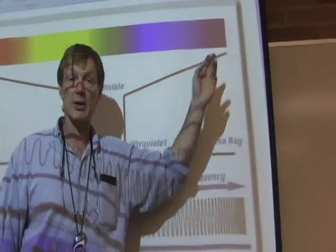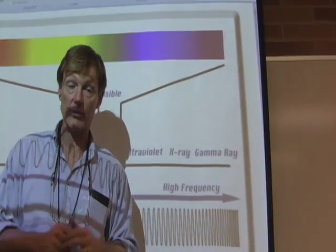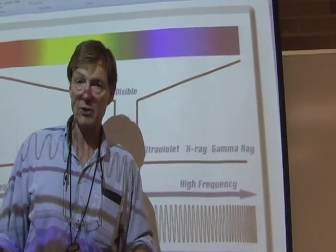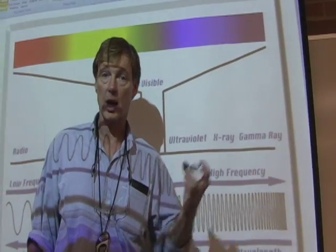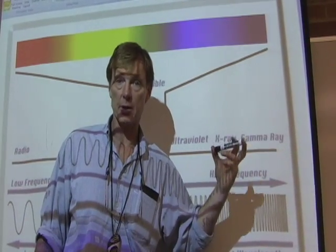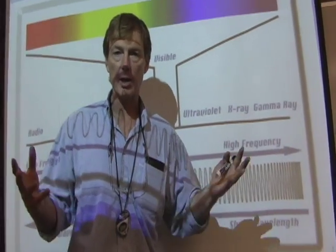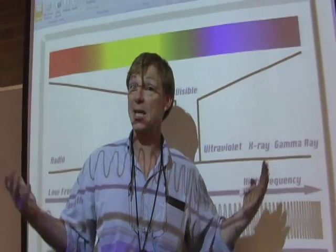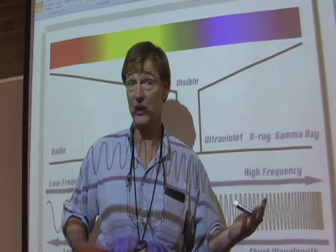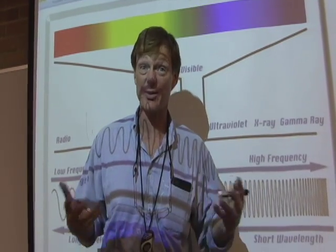There's stuff out here we can't see called ultraviolet. It's above violet, higher frequency. Bees can see in the ultraviolet, not all the way into it, but pretty far into it. The flowers that bees pollinate, they look pretty boring to us because we can't see in the infrared. I mean, in the ultraviolet. In the ultraviolet, they're very inviting.